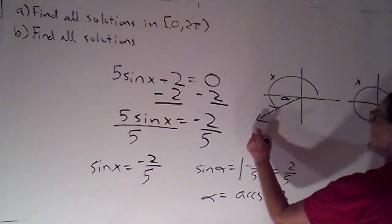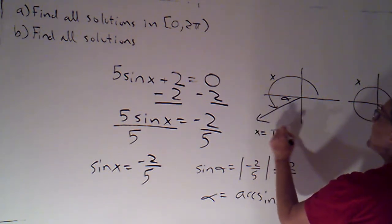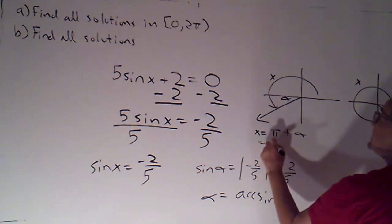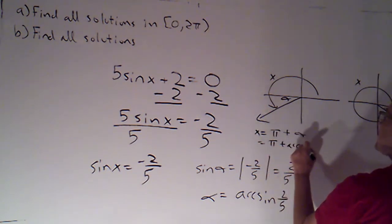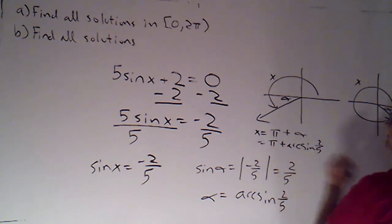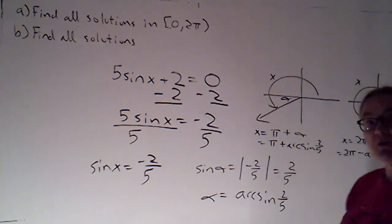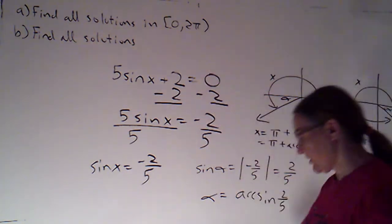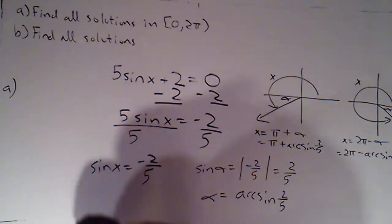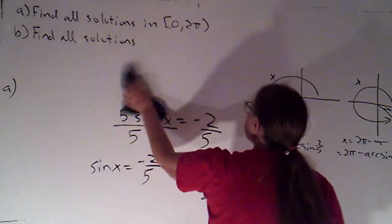Excellent. So here I can say x was π plus alpha. So that's going to be π plus arc sine of 2 fifths. And here I'm going to say x was 2π minus alpha. So that's 2π minus arc sine of 2 fifths. So those are my two solutions between 0 and 2π. Let me just write down the answers over here.